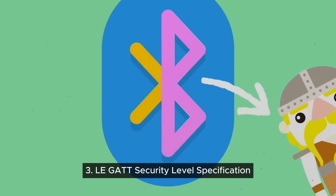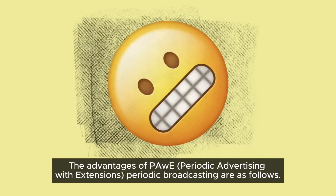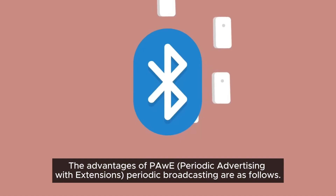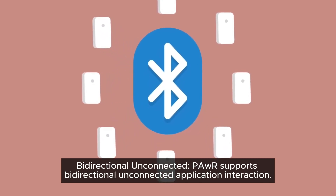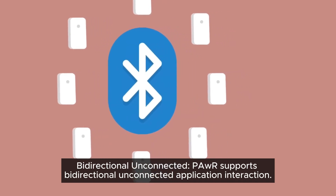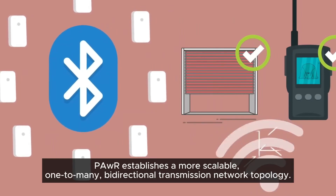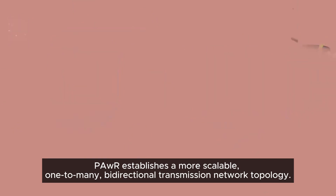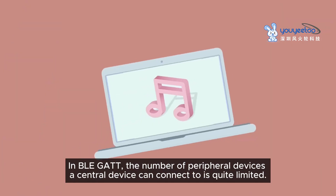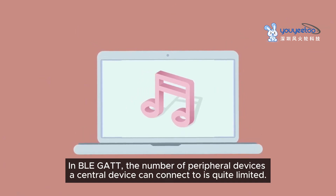The advantages of PAwR (Periodic Advertising with Responses) are as follows. First, bi-directional unconnected: PAwR supports bi-directional unconnected application interaction. Second, scalability: compared to the Bluetooth connection approach, PAwR establishes a more scalable one-to-many bi-directional transmission network topology.